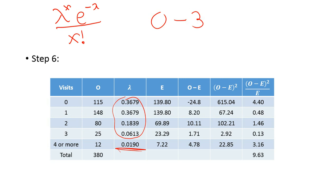I've multiplied lambda times the total to get all of my Es. I've multiplied all my total observations, 380, by each lambda to find my expecteds for each. My expecteds are there, and then I just go through my normal chi-squared test. O minus E, square it, and then divide it by whatever my E was. We get our numbers of 4.4, 0.48, and we end up getting a number of 9.63.